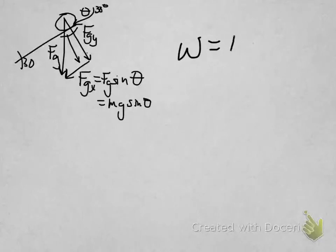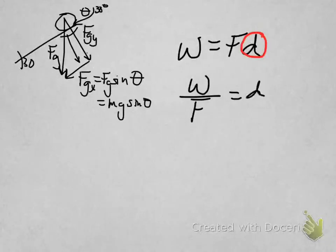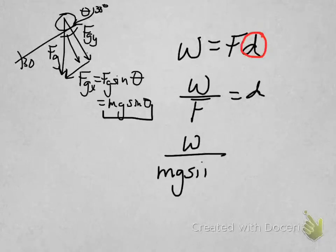So we know that the work done is equal to the force doing the work times the distance the object travels. And distance is what we're interested in, so we're going to rearrange to solve for that. So work divided by the force doing the working is equal to the distance. And the force that's doing the working is this, mg sine 30. So work divided by mg sine 30 will give us our distance.